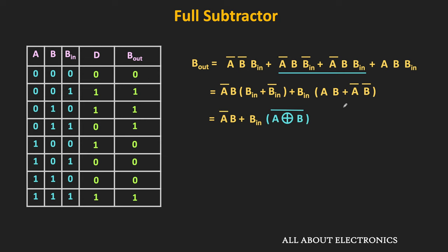So using one full subtractor block, we can do the subtraction of two 1-bit numbers along with the borrow input. But if you want to perform the subtraction of two n-bit numbers, then we require n such full subtractor blocks. So in the next video, we will see how by combining n such blocks we can design the n-bit subtractor, and we will also see how using the adder circuit itself we can perform the subtraction. I hope in this video you understood about the half subtractor and the full subtractor. If you have any question or suggestion, do let me know in the comment section below. If you like this video, hit the like button and subscribe to the channel for more such videos.